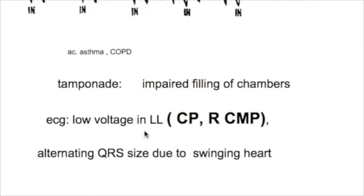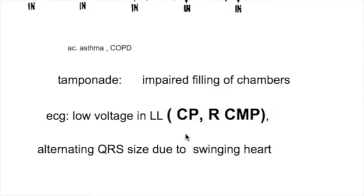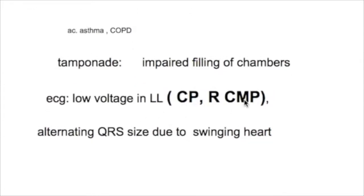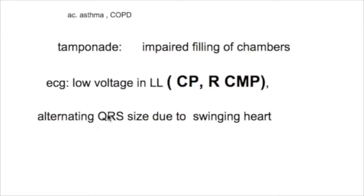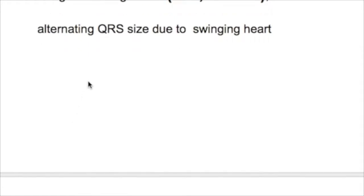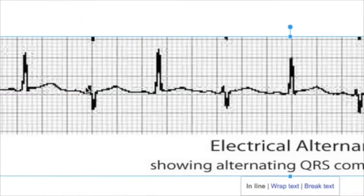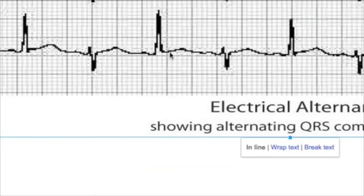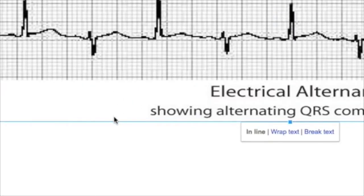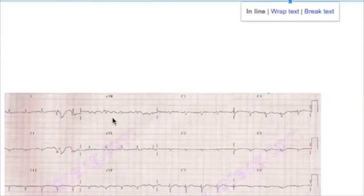What are the conditions that produce low voltage ECG? Three conditions that produce low voltage ECG are constrictive pericarditis, restrictive cardiomyopathy, and cardiac tamponade. In cardiac tamponade, we also see alternating QRS complexes due to a swinging heart — this is known as electrical alternans.